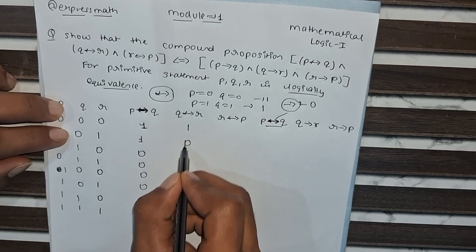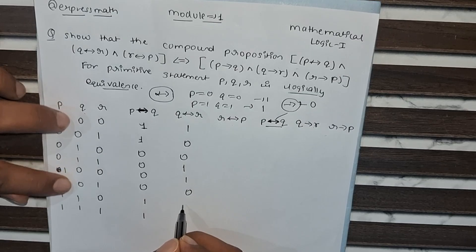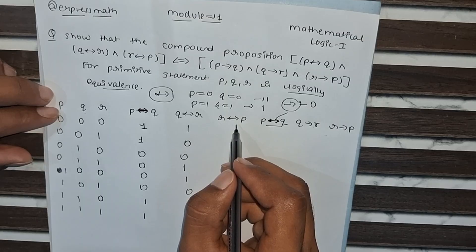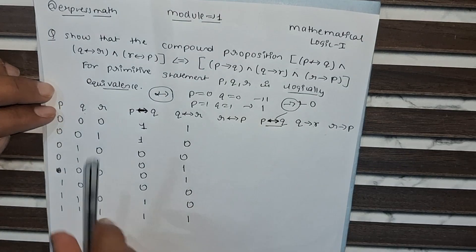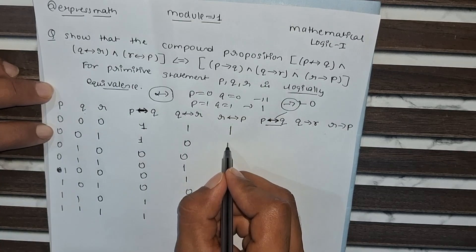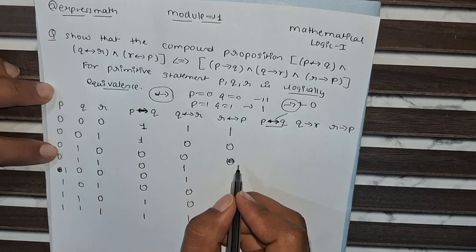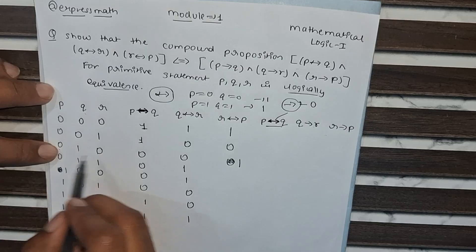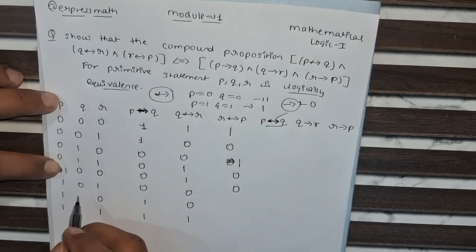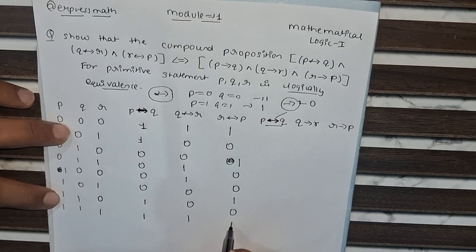For Q biconditional R: both values are 0 giving 1, then 0, 1, 1, 0, 0, 0, 1. For R biconditional P, comparing R and P: the values are 1, 0, 0, 0, 0, 1 — when both are 0, it will be 1. The computed column values for R biconditional P are: 1, 0, 0, 0, 1, 0, 0, 1.